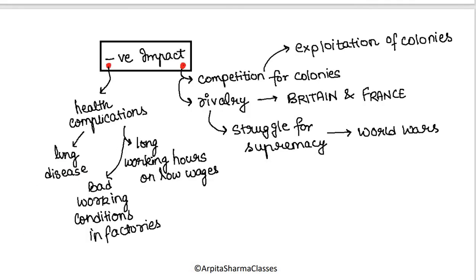Just like every coin has two sides, the Industrial Revolution had both positive and negative impacts. For example, competition increased and rivalry grew — Britain and France became rivals because competition intensified. Colonies were exploited and there was a struggle for supremacy, which is why world wars happened. People became more dependent on machines, and factory owners used to make their laborers work extra hours. This led to bad working conditions, and wages were less — factory owners gave less wages to laborers in order to earn more profit.